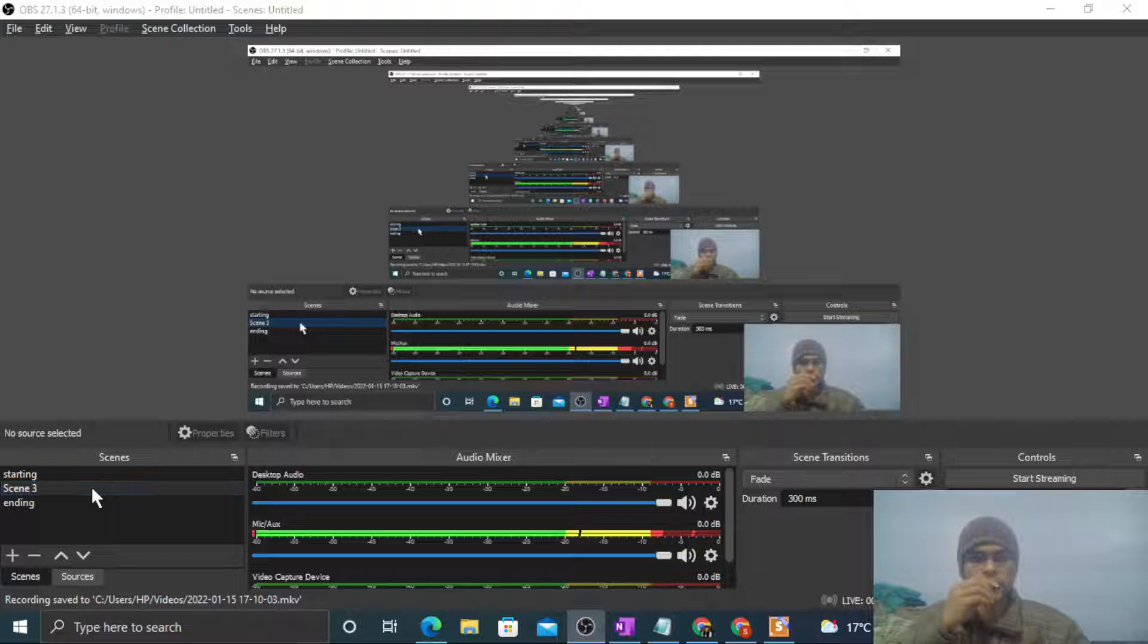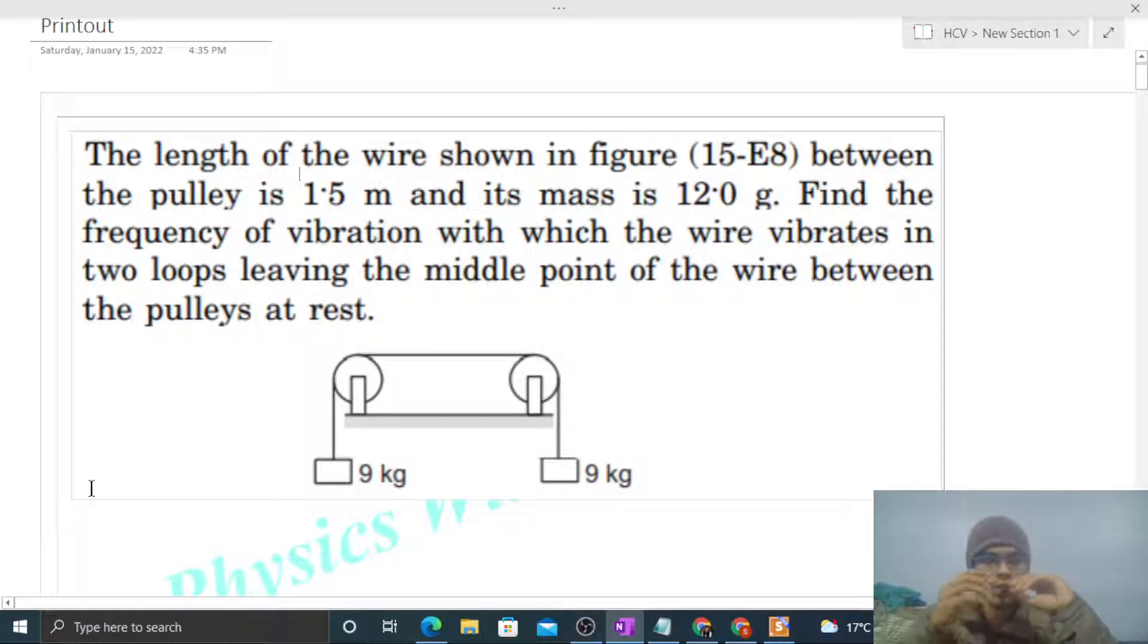Hi everyone, today let's discuss an interesting problem. The length of the wire shown in the figure between the pulleys is 1.5 meters and its mass is 12 grams. Find the frequency of vibration with which the wire vibrates in two loops, leaving the middle point of the wire between the pulleys at rest.